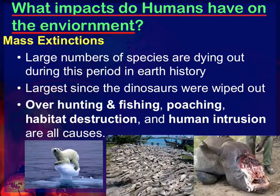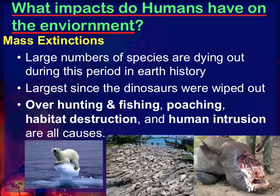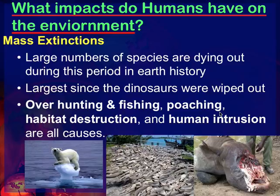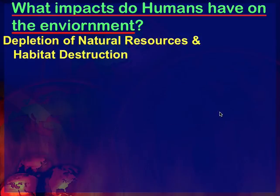Another good example is poaching. Here's a rhinoceros that has been butchered just for its horn, because in some tribal communities they believe the horn has medicinal purposes — some believe it's an aphrodisiac when ground up. They go out, find these rhinos, literally butcher the front of their faces, and leave them for dead. This is obviously decimating the population of rhinos, whose numbers are already low to begin with.